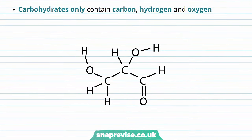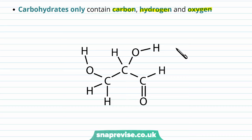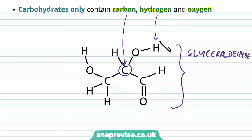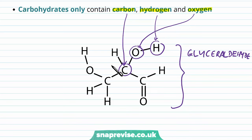A carbohydrate molecule, whichever type it is, contains only three elements: carbon, hydrogen, and oxygen. Here we have an example of a carbohydrate — glyceraldehyde — and you can see it consists of only those three elements. We have carbon atoms, hydrogens scattered around, and various oxygens too, but there's no additional element in this structure.